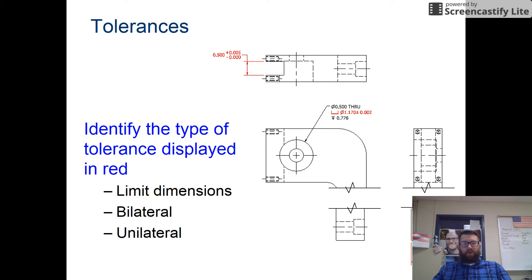We want to identify the type of tolerance displayed in red. We have limit dimensions, that would be unilateral tolerance on the first part, bilateral tolerance in the middle, and then limit dimensions on the right side.